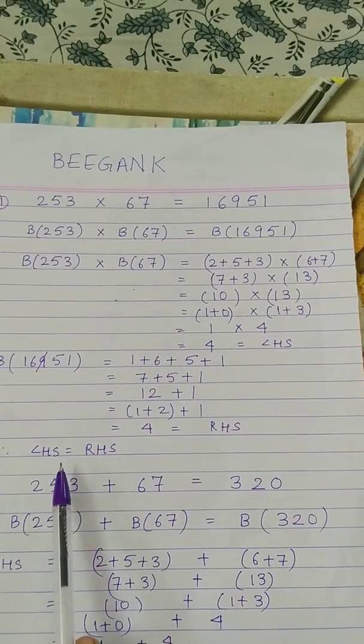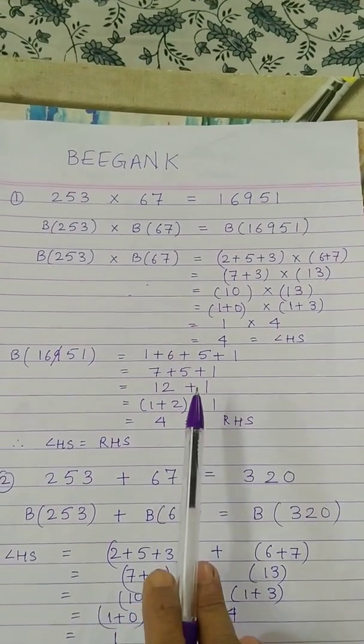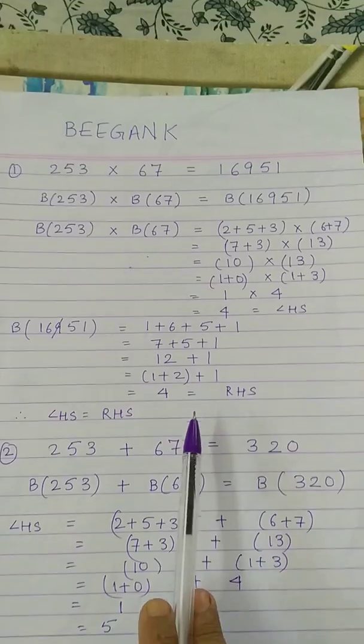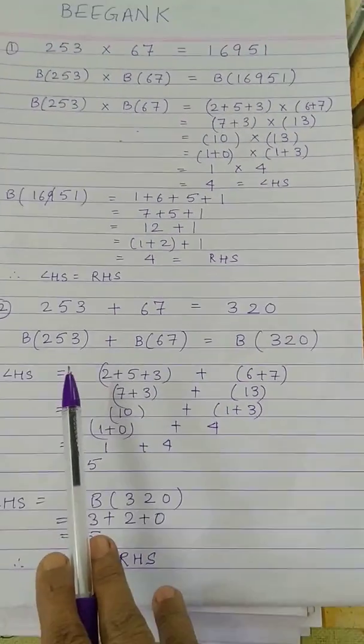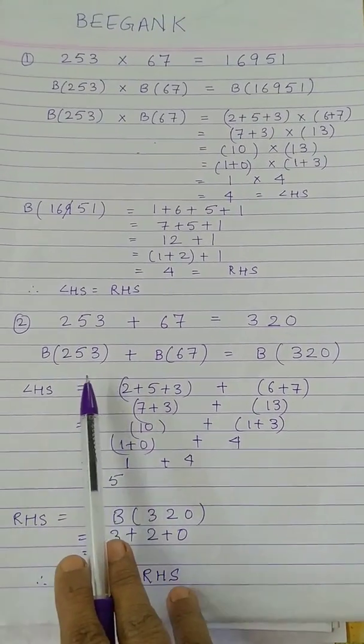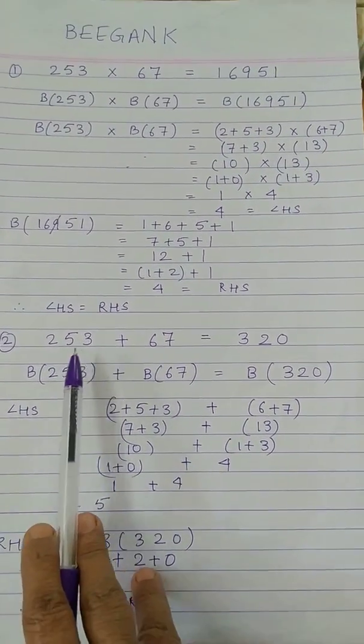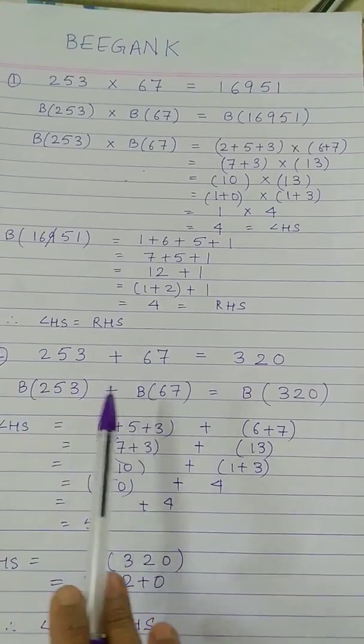Let's see another example. Now here the operation is plus. Again we do the same thing. Beejank of LHS is we add the digits here, we add the digits here, and operation is plus.